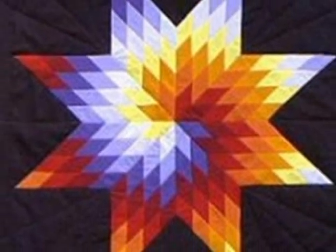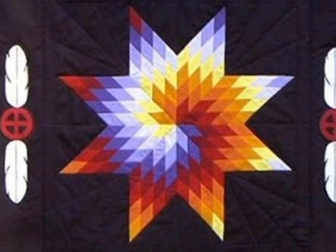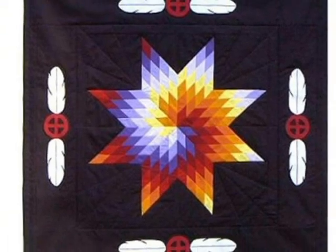Rhombuses with acute angles of 45 degrees are used to form intricate patterns in star quilts made by the Sioux Indians.